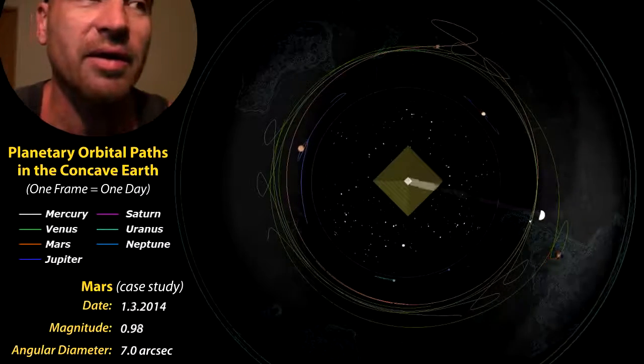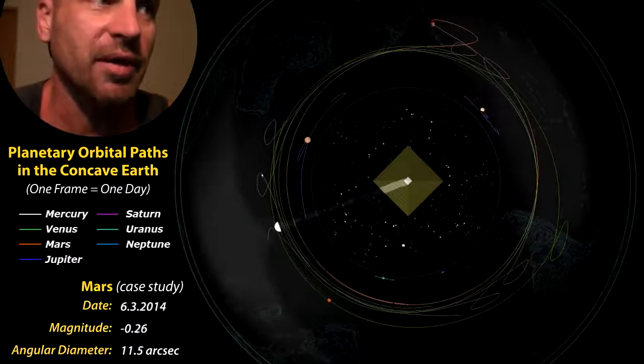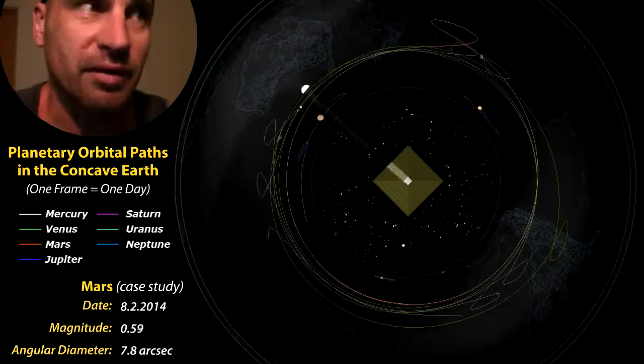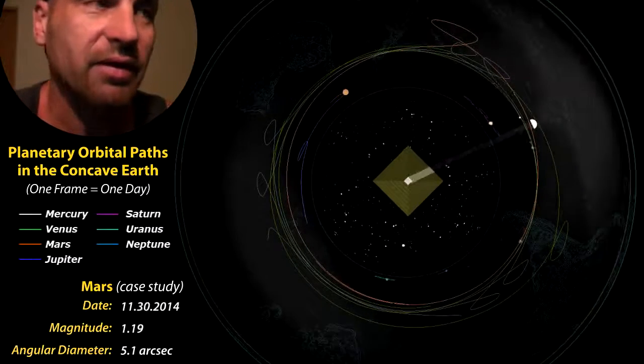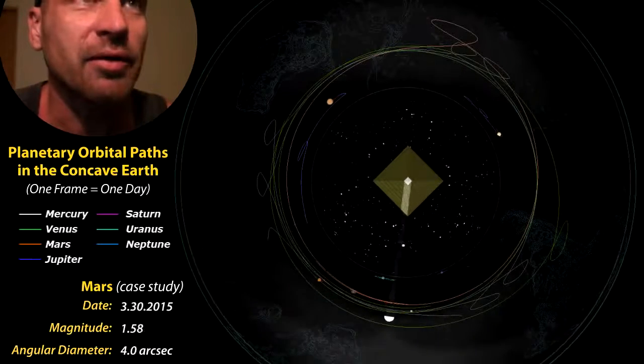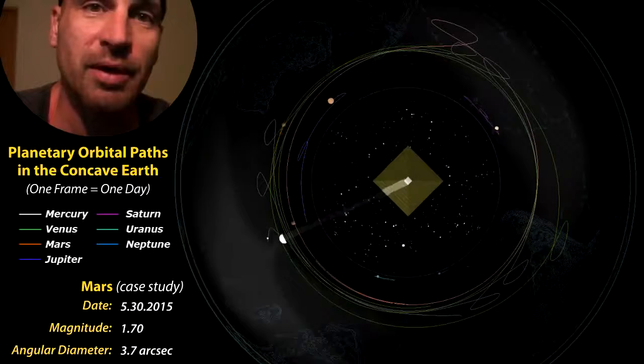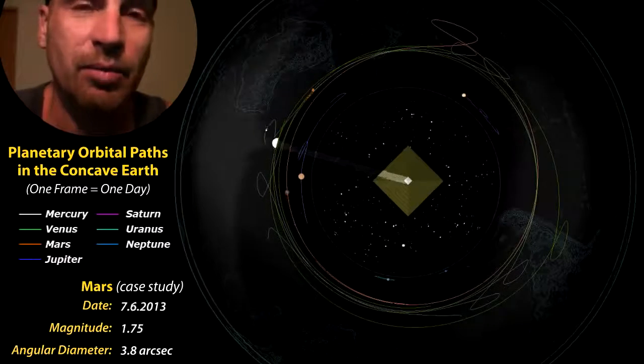It also increases its brightness. The magnitude is measured by the lower the number makes it a brighter object in the sky. So during the retrograde the planets are going to become bigger. The angular diameter is going to get bigger and they're also going to become brighter.